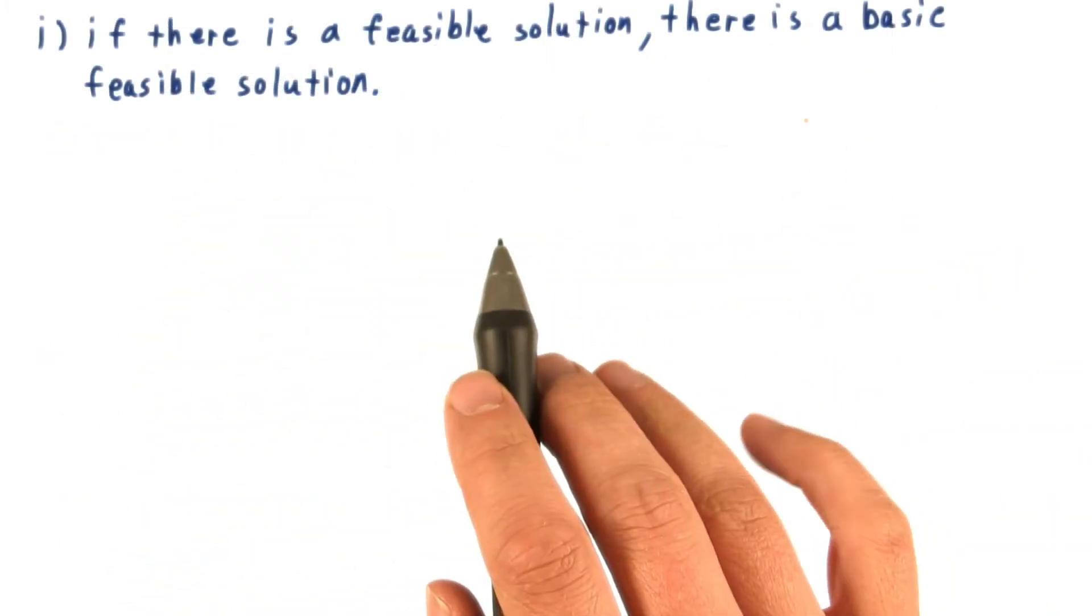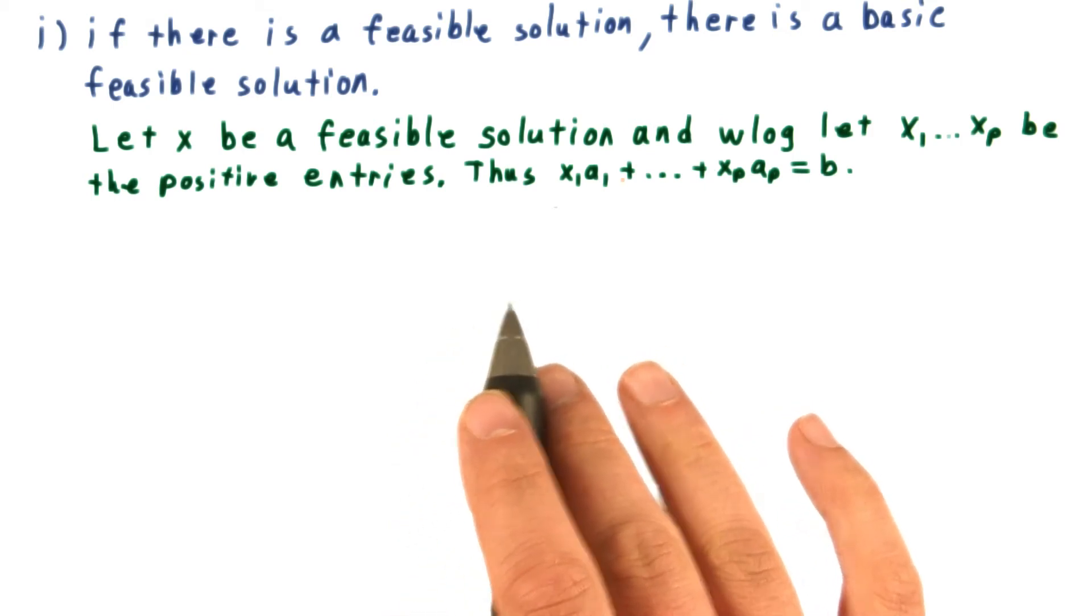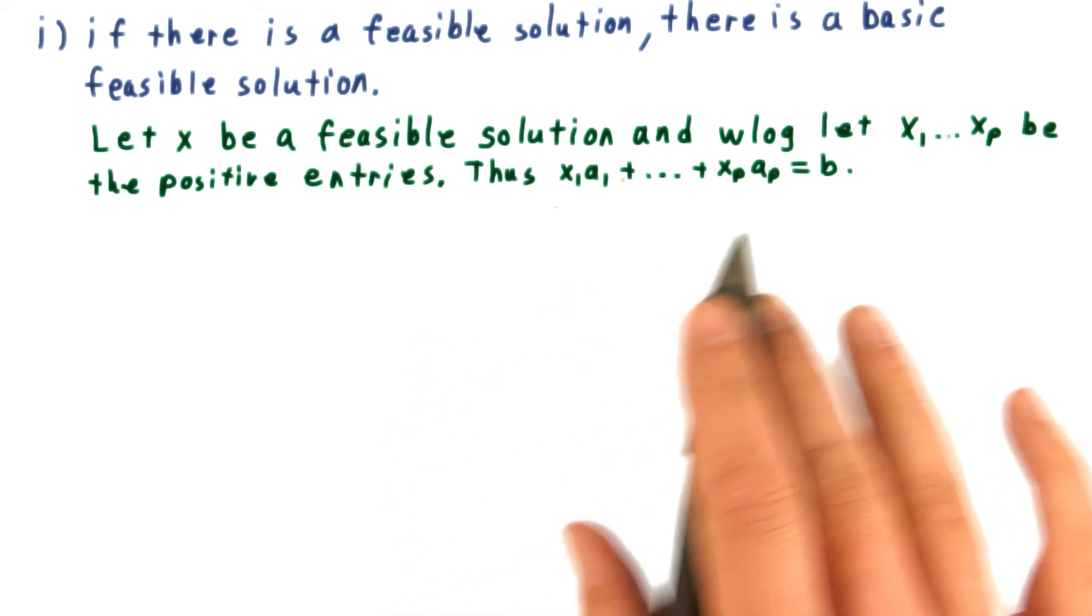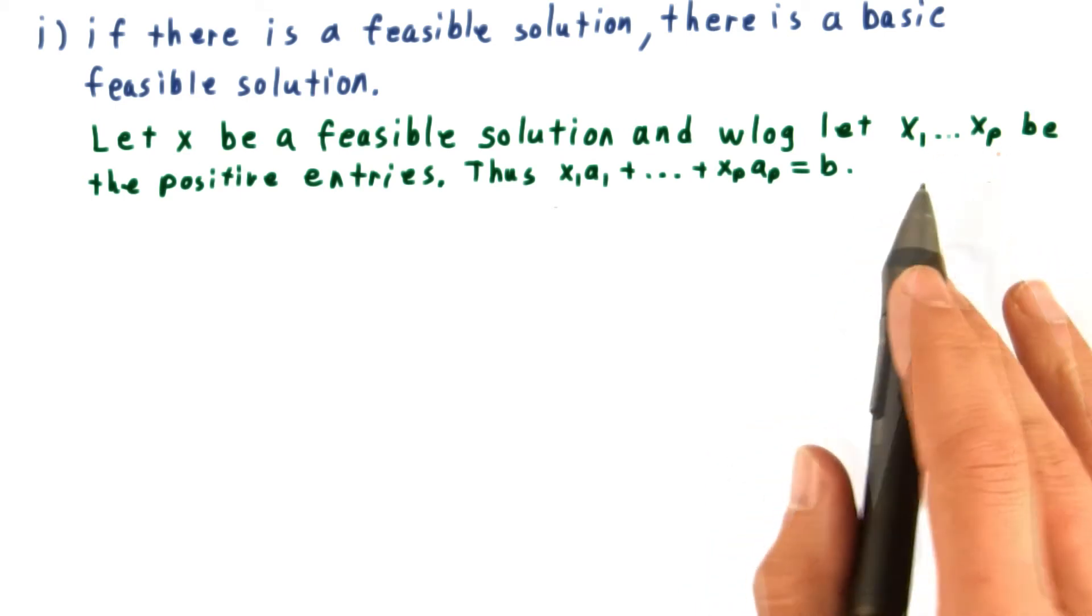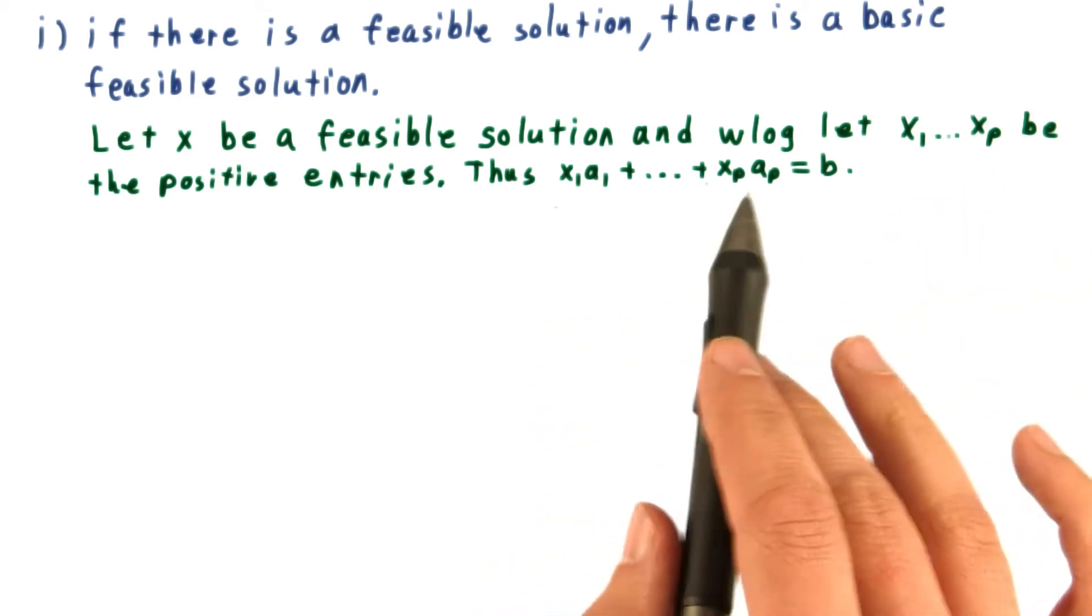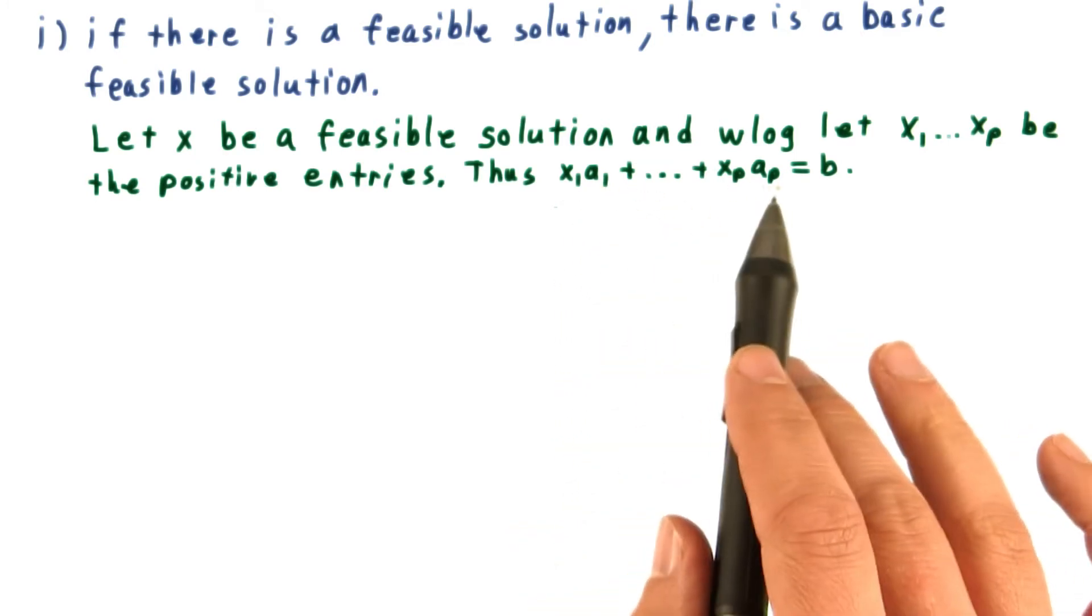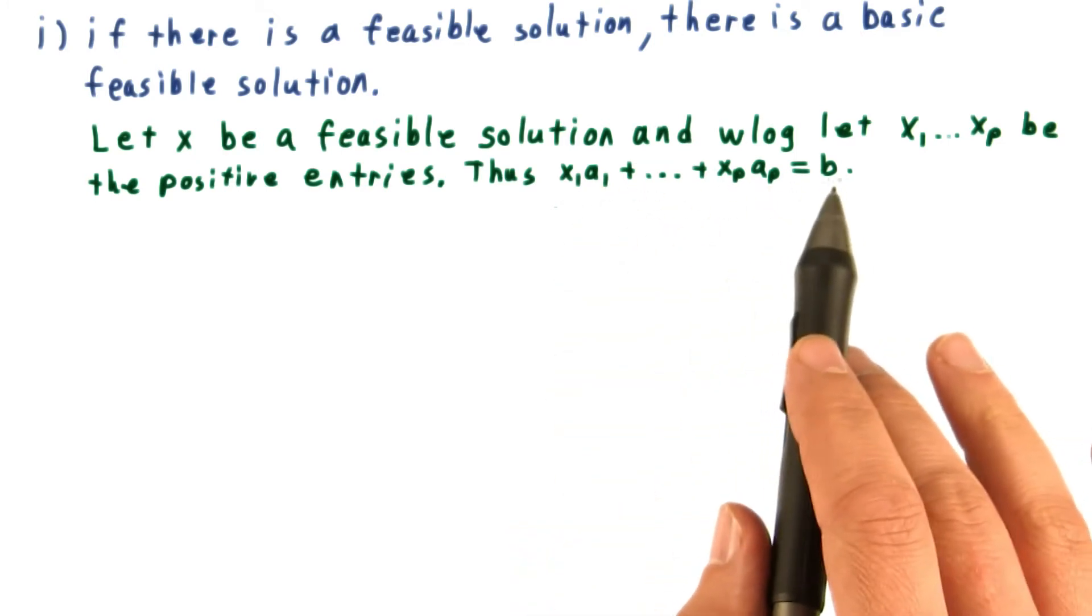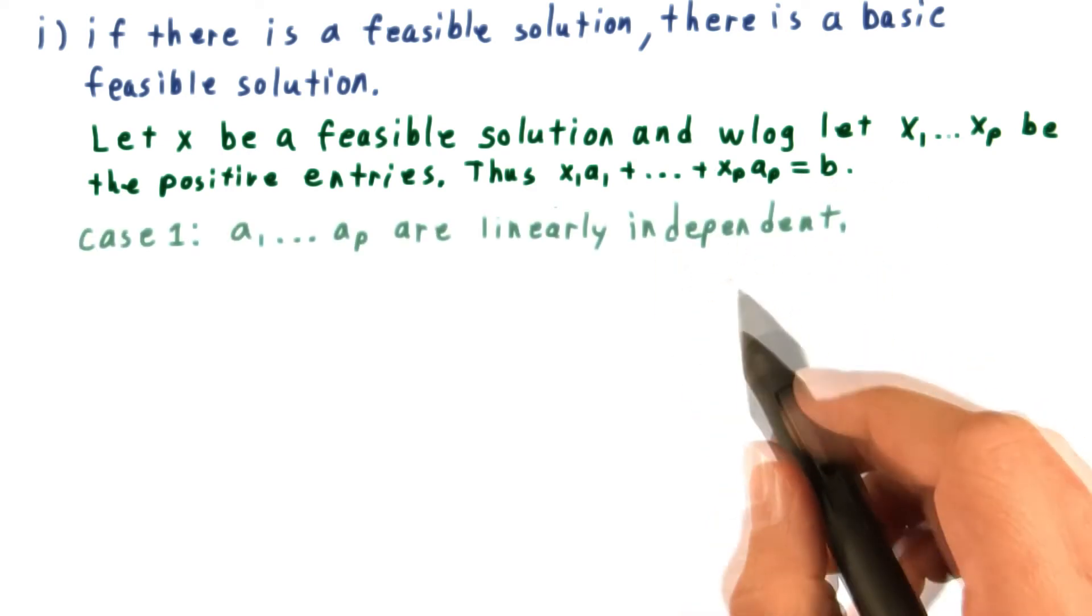We'll start by proving the first point. Let x be a feasible solution, and we'll consider only the positive entries. Without loss of generality, let's assume that those are the first p. Then it must be the case that this linear combination of the columns A1 through Ap is equal to b. That is, after all, part of what it means to be feasible. There are two cases.